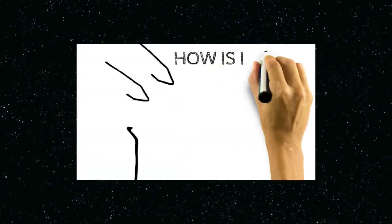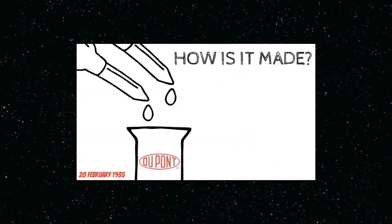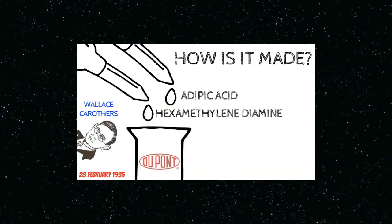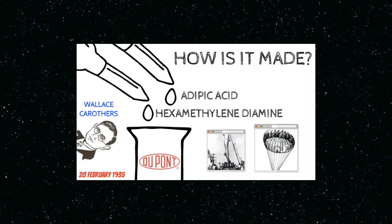It started off on 28 February 1935 at a place called DuPont, where a man named Wallace Carothers mixed two chemicals, adipic acid and hexamethylenediamine together, resulting in a polyamide synthetic fiber called nylon, which then became a huge success in the business world for stockings and parachutes.